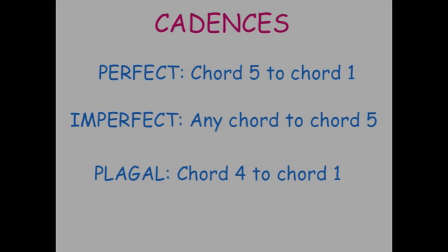Now, cadences are sets of chords, usually at the end of musical phrases. So a perfect cadence would be any chord 5 to chord 1. So if we were in the key of C, that would be the chord of G to the chord of C.